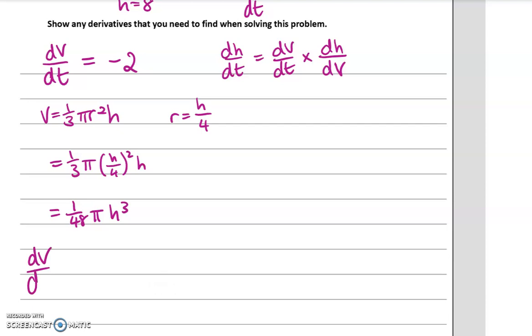From here, we can do dV/dH by differentiating this thing. So it becomes (3/48)πh², which simplifies to (1/16)πh². Let's go back to what we wanted, which was dH/dt, using this chain rule that we have started off with. That will be dV/dt multiplied by dH/dV. So that's this one, but flipped over. So that'll be 16 over πh².